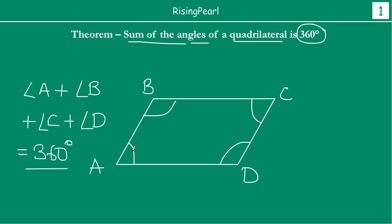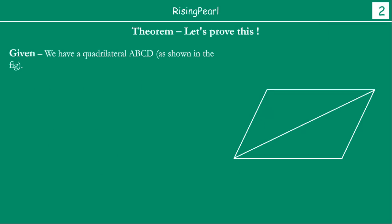So how can we prove this? Let us get started on our proof. We start with what is given to us — we have a quadrilateral ABCD as shown in the figure.